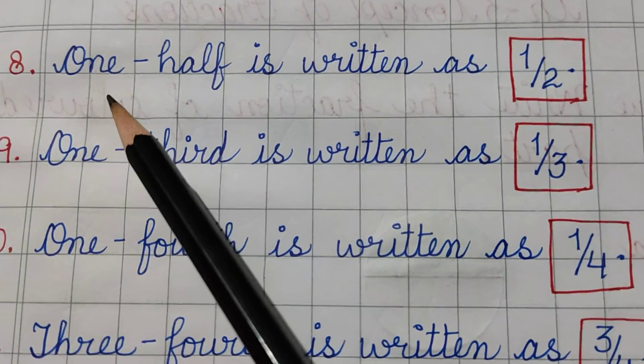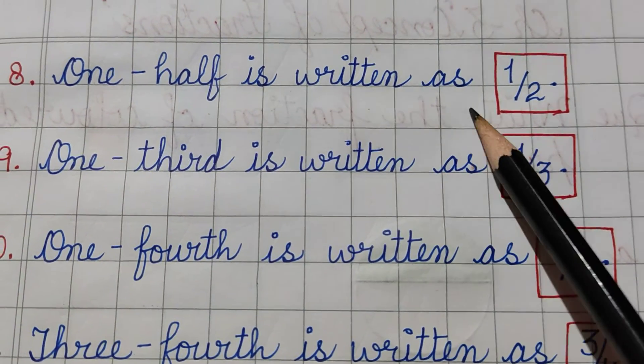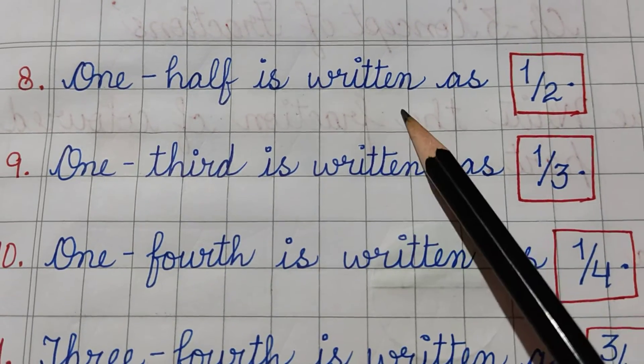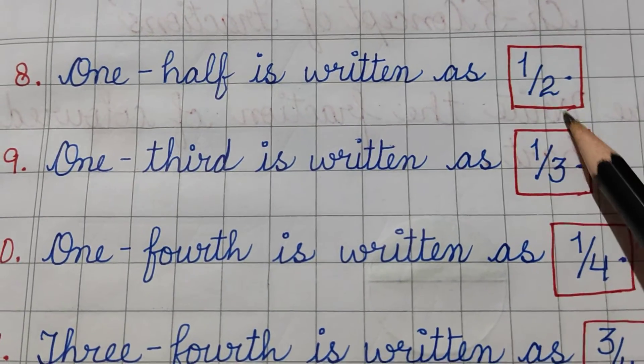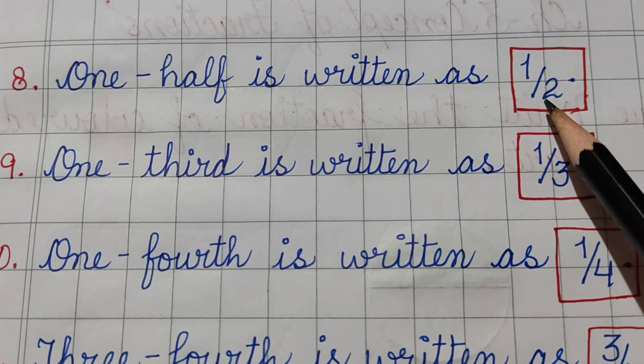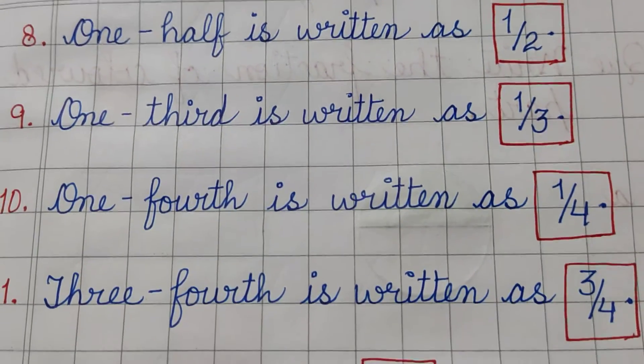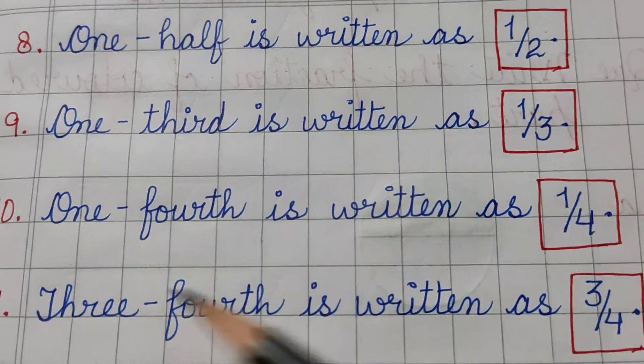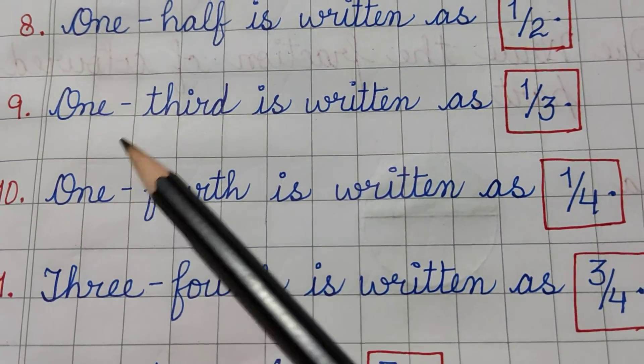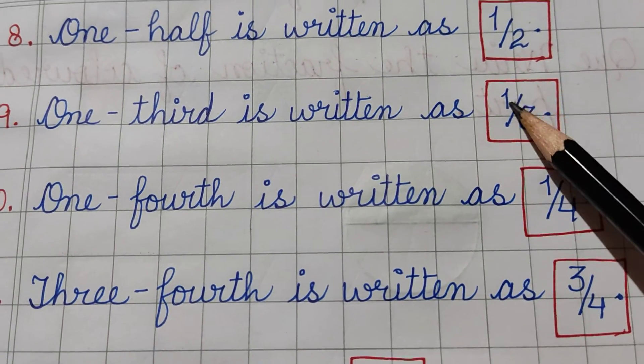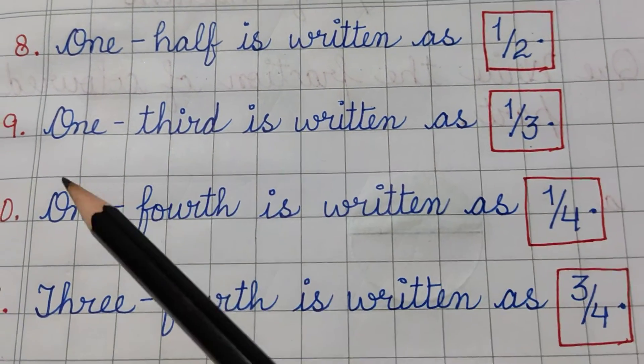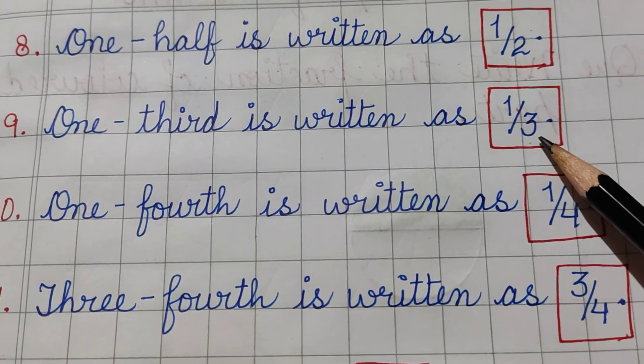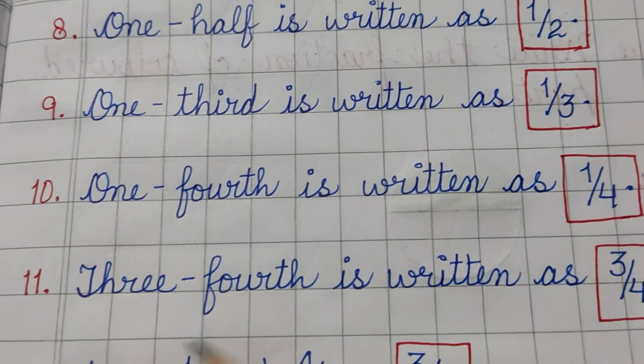8th one is one half is written as 1 by 2, 1 upon 2. You can write half as this, you can write 1 upon 2 as a half. 9th one is 1 third is written as 1 upon 3, or you can say 1 by 3.